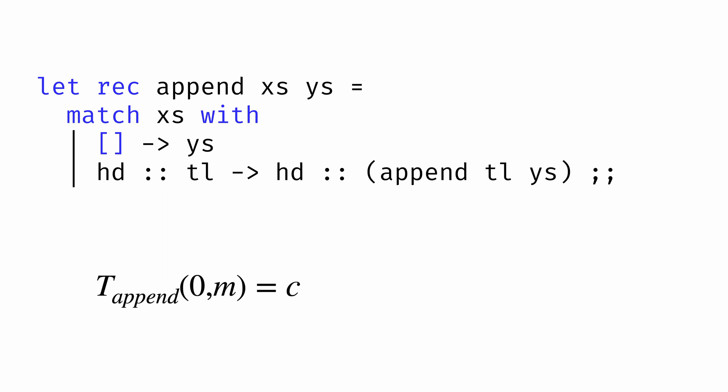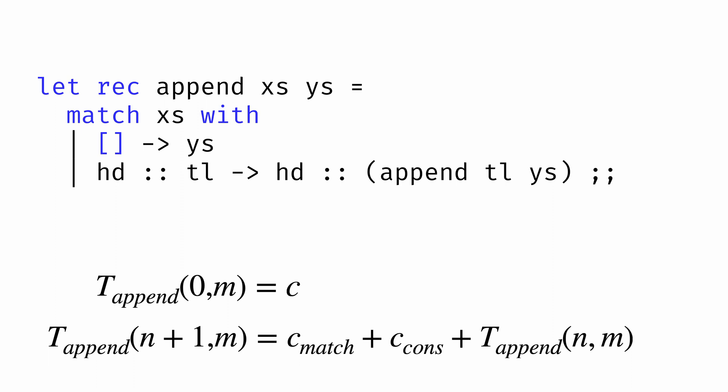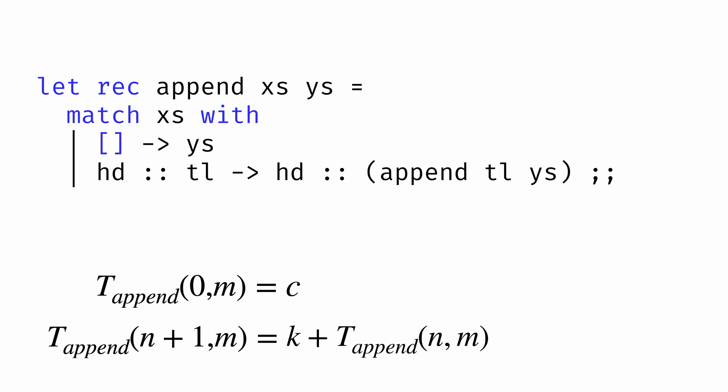The more interesting case is what happens if the first argument is non-empty. In that case, we match the list to a head and a tail and then cons the head onto the result of recursively calling append on the tail and y's. So we characterize the running time as some constant amount of time for the match, some constant for the cons, and then tappend(n, m) for the recursive call. Since the sum of constants is just a constant, we simplify to just a constant k plus the time for the recursive call. This gives us two recurrence equations to characterize the running time of append.